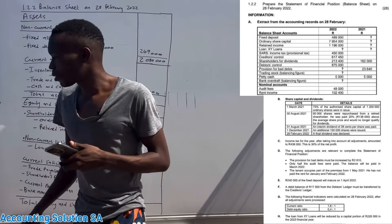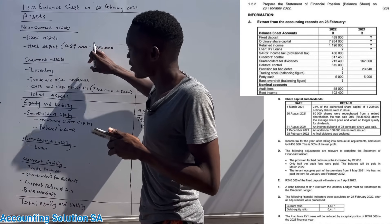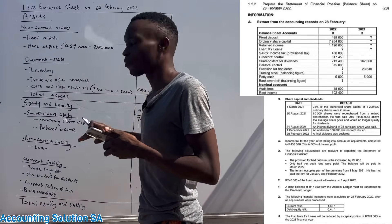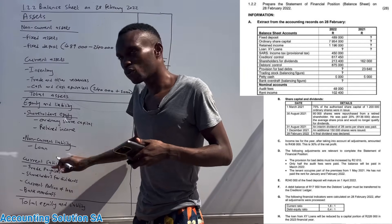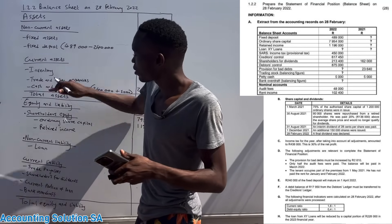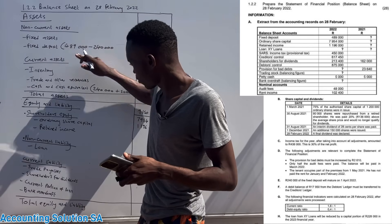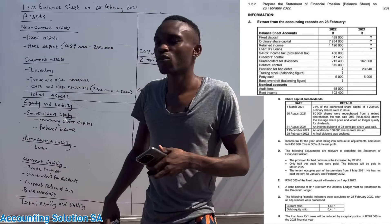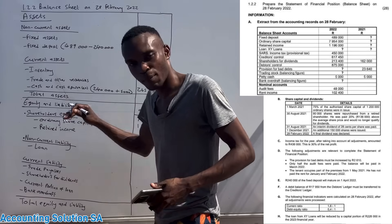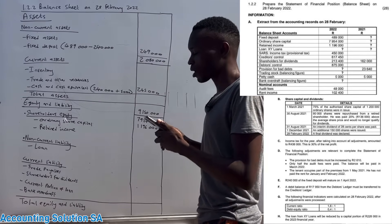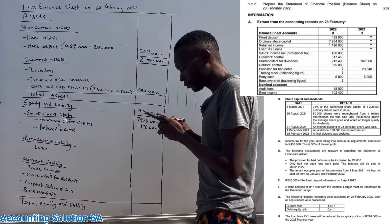When preparing a balance sheet, especially with an answer book like this, don't start from the top and work one by one. Instead, read the transactions — if one is related to loan, do loan; if another is inventory, do inventory. Some balances you will only get as a balancing figure after completing other parts.